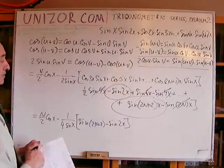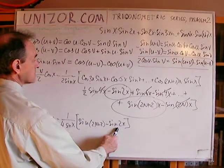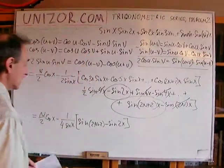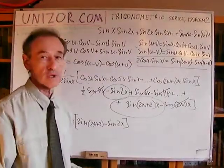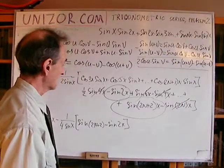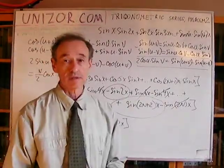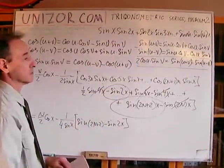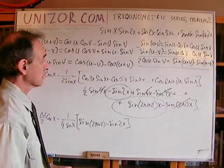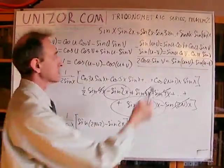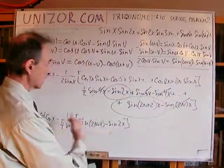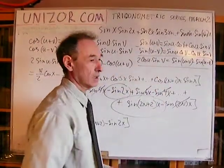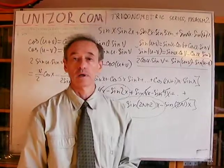So the result is: n/2·cos(x) − 1/(4sin(x))·[sin(2n+2)x − sin(2x)]. This is basically the end of it. If you want, you can convert the difference between sines into a product so the formula might look a little better, but it doesn't really matter. This is a compact formula representing this particular series, without any unnecessary dots.